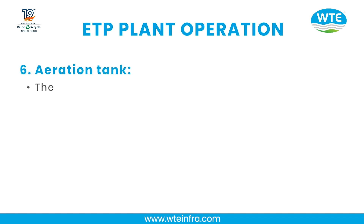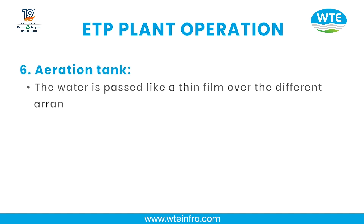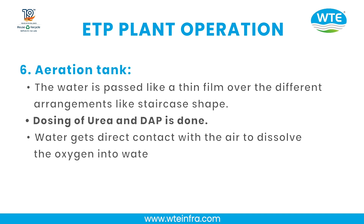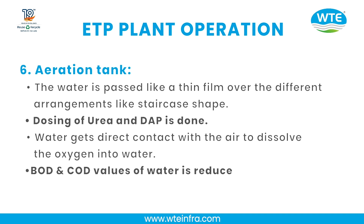Step 6 — Aeration Tank: Water is passed like a thin film over different arrangements in a staircase shape. Dosing of urea and DAP is done. Water gets direct contact with air to dissolve oxygen into the water. BOD and COD values of the water are reduced by up to 90%.